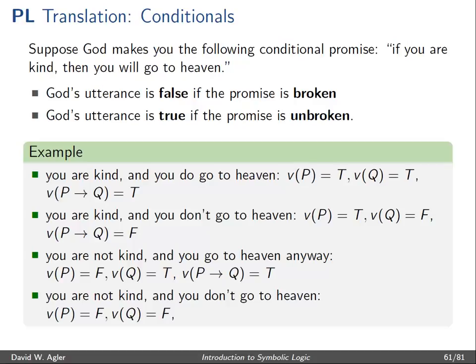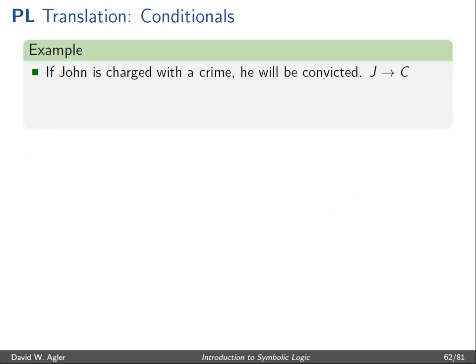Lastly, suppose you are not kind and you don't go to heaven. Here again, God has not broken a promise — God said on the condition that we are kind, then we'll go to heaven, and so what God has said is true. The same holds in symbolic logic: if P is false and Q is false, then the whole complex conditional is true. So we have a parallel between conditional promises remaining broken or unbroken and the truth and falsity of the conditional, and the extension is that all conditionals behave like this.